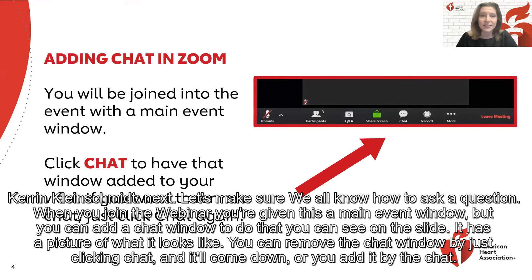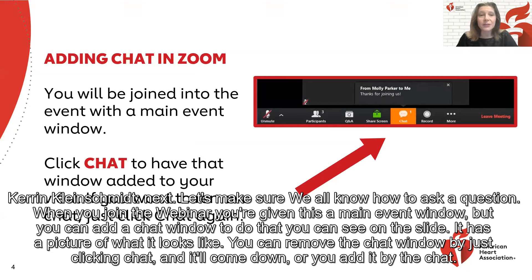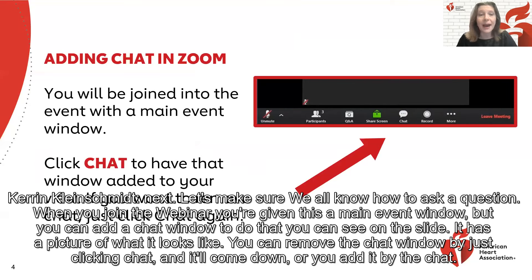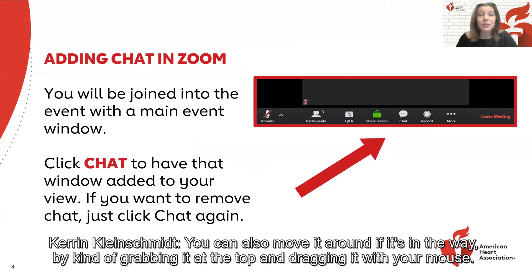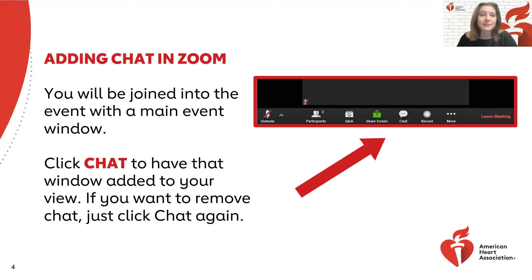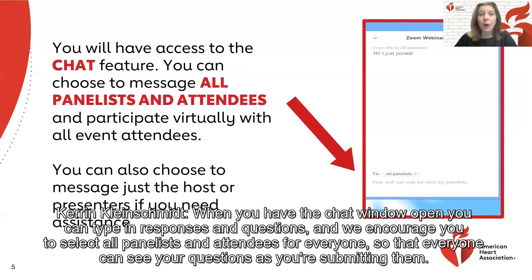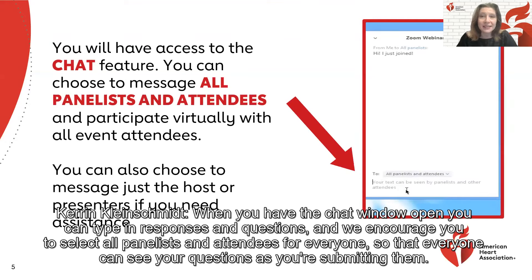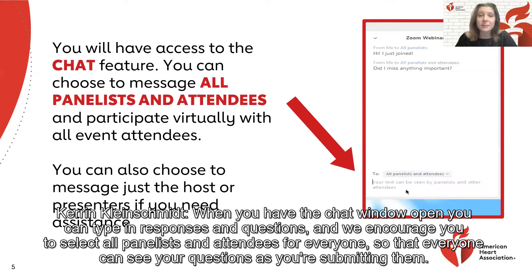Let's make sure we all know how to ask questions. When you join the webinar, you were given a main event window, but you can add a chat window. You can remove the chat window by clicking chat, and add it the same way. You can also move it around by grabbing it at the top and dragging it with your mouse. When you have the chat window open, you can type in responses and questions. We encourage you to select all panelists and attendees so that everyone can see your questions as you're submitting them.